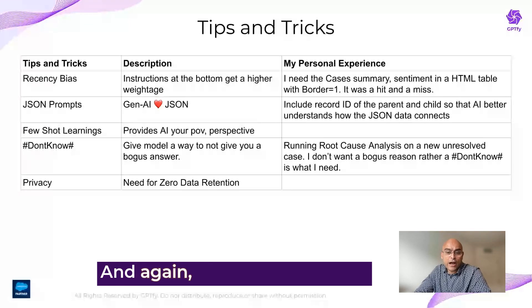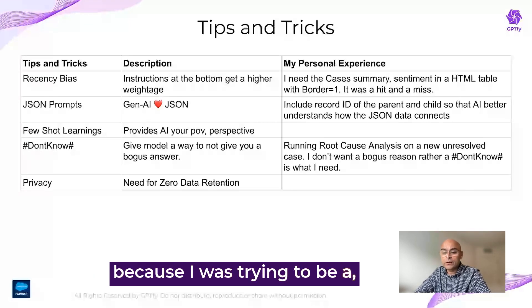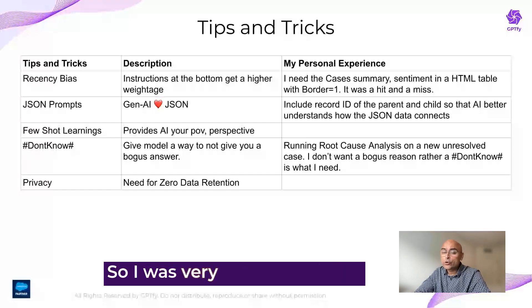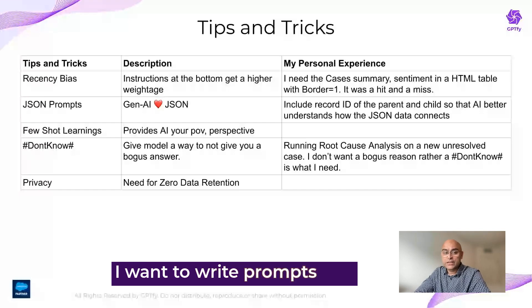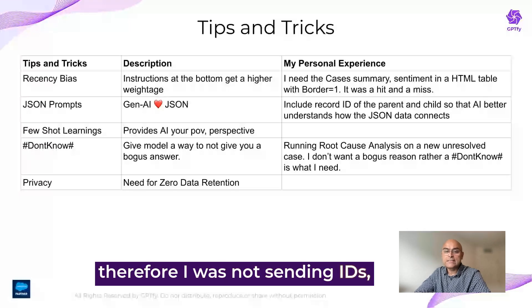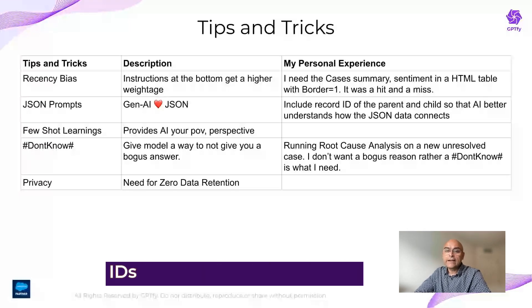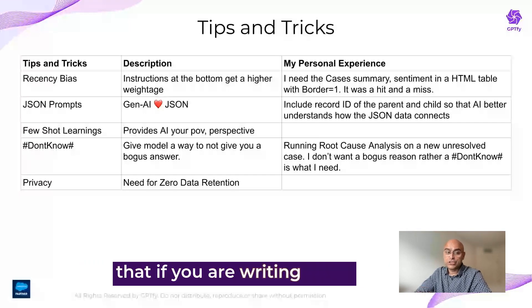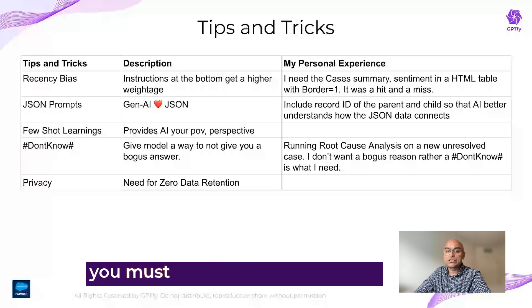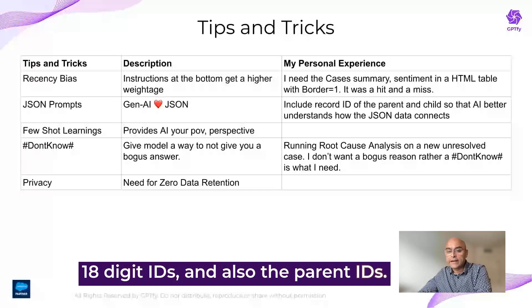I was not doing that because I was trying to be what someone called a 'token-conscious business analyst.' I was very token-conscious and I wanted to send only absolutely essential information, so I was not sending IDs. But then I realized that sending IDs is actually very beneficial. I would recommend that if you are writing JSON prompts and sending JSON, you must send the record IDs — the 18-digit IDs — and also the parent IDs.